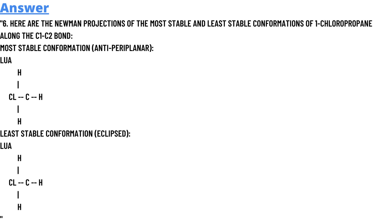The correct answer to the question: Here are the Newman projections of the most stable and least stable conformations of 1-chloropropane along the C1-C2 bond. Most stable conformation is anti-periplanar. The formula is given below.